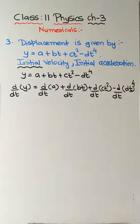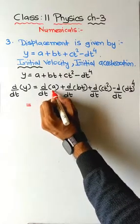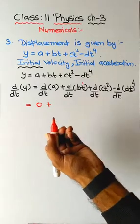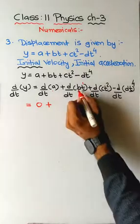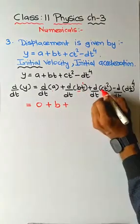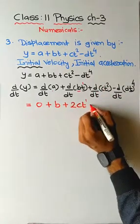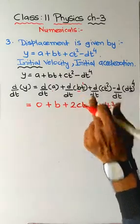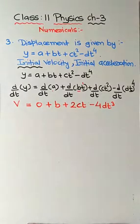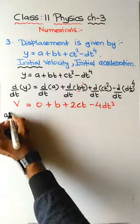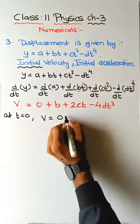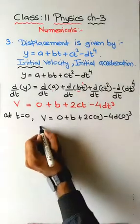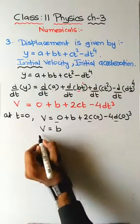The constant term a has no t, so its derivative is 0. For bt, t raised to 1 becomes t raised to 0 which equals 1, leaving just b. For ct², 2ct remains. For dt⁴, 4dt³ is the derivative. So velocity v = b + 2ct - 4dt³. For initial velocity, put t = 0: the terms with t all vanish, giving initial velocity = b.